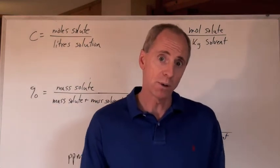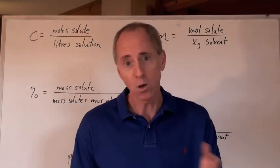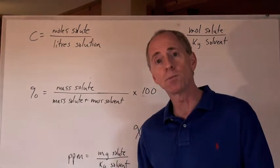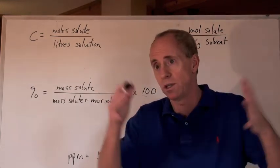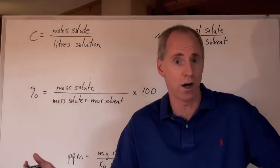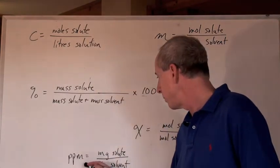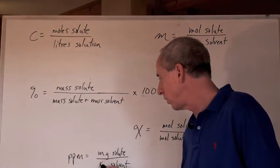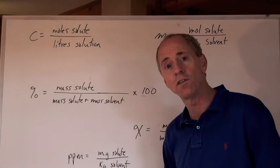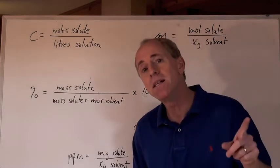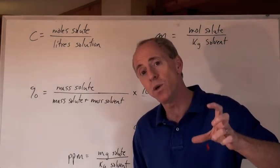You heard of parts per million and parts per billion? If somebody says calculate the parts per million of a certain solute in a given amount of liquid or air, parts per million is the milligrams of the solute divided by the kilograms of the solvent. There's a million difference between the two units.